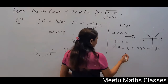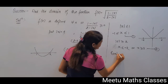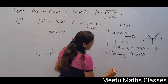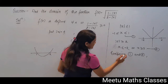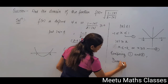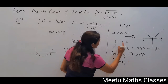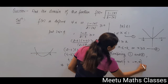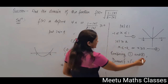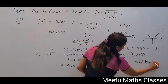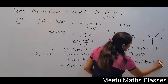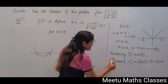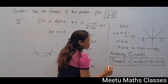Combining the two sets, we get the domain of your function f as (-∞, -2] ∪ [-1, 1] ∪ [2, +∞). These are the points that will come in the domain of your function, and this set represents the domain.